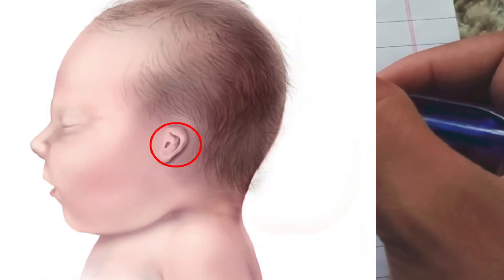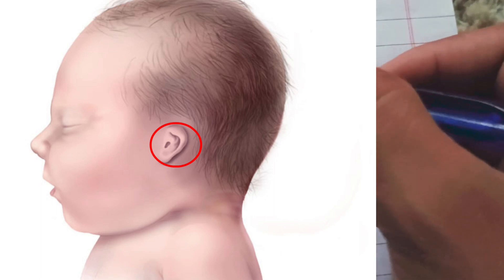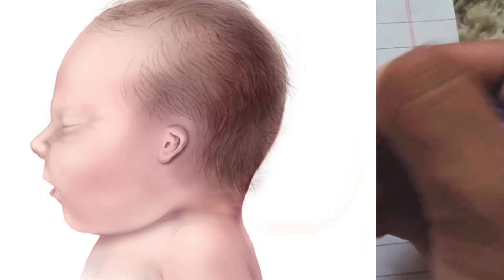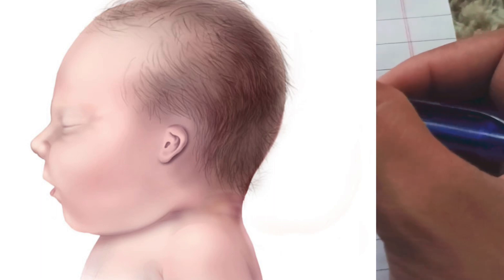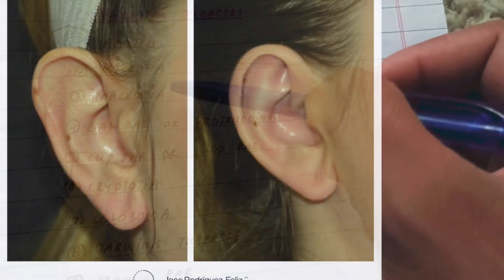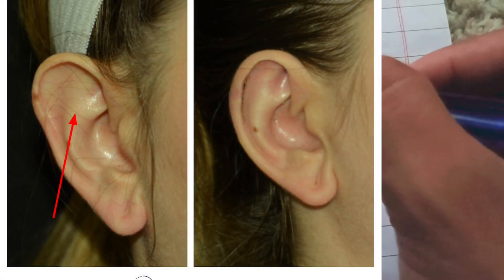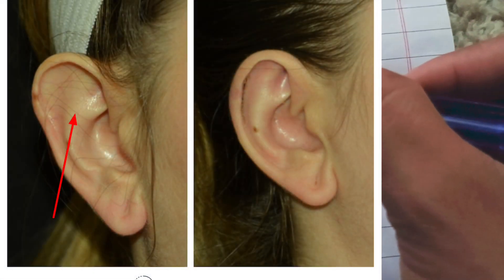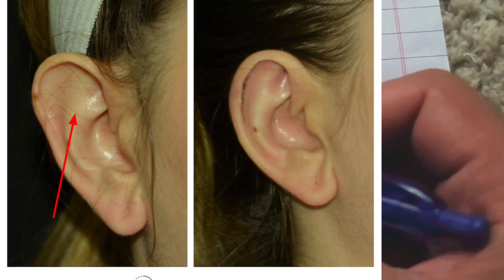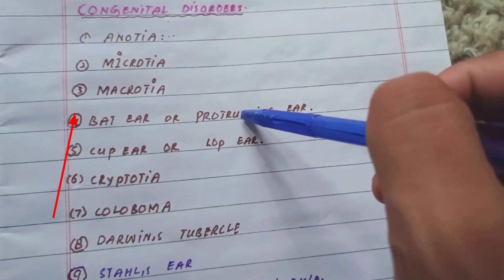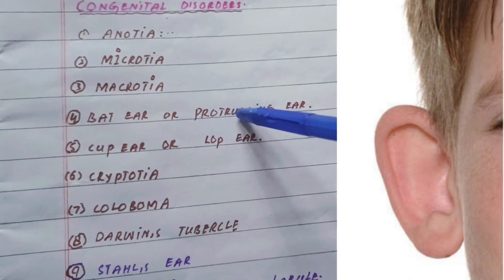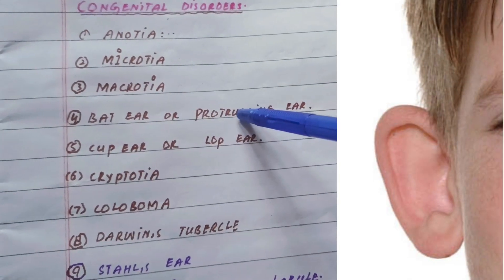The third condition is macrotia, which is abnormally large ears. The fourth one is bat ear or the protruding ear, in which the ear is abnormally protruded.